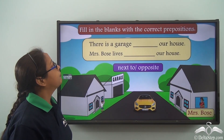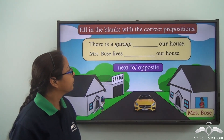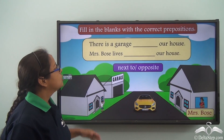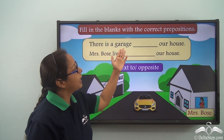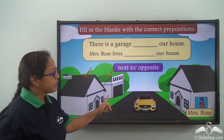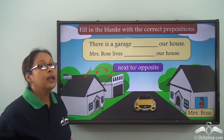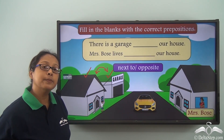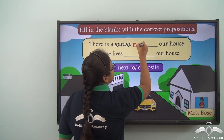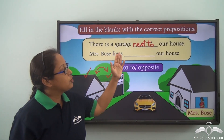Now let's fill in the blanks with the correct prepositions. There is a garage ___ our house. The options are next to and opposite. This is the garage and this is my house. We find that they are side by side, right beside. So when we talk about things being side by side or right beside, we use next to. There is a garage next to our house.